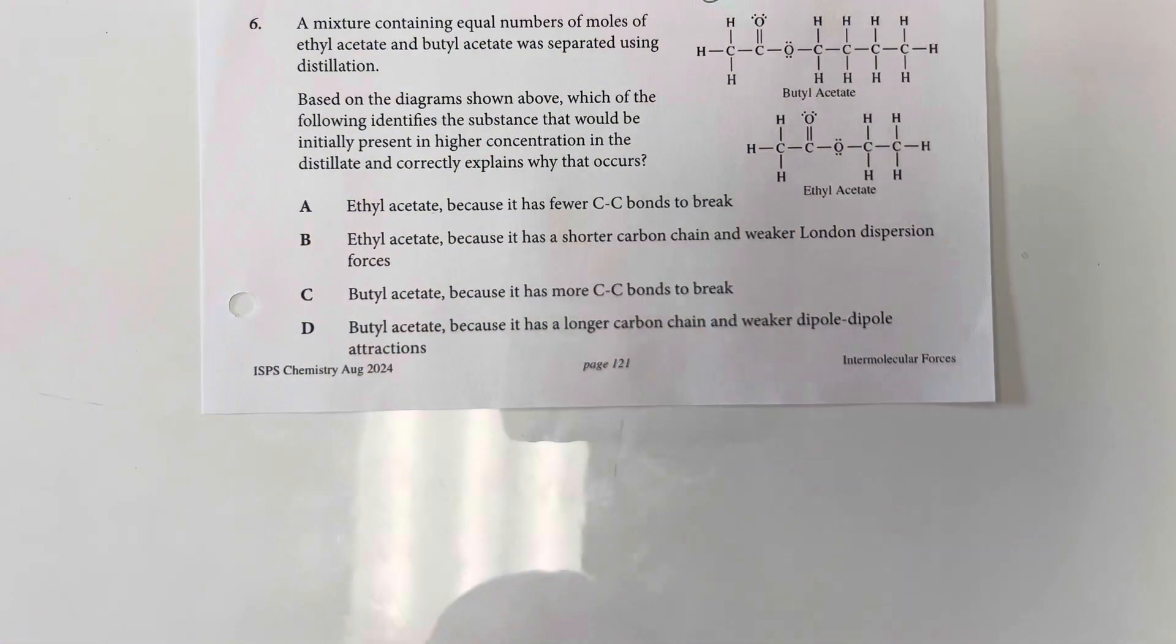A mixture containing equal number of moles of ethyl acetate and butyl acetate was separated using distillation. Based on the diagram shown above, which of the following identifies the substance that would be initially present in higher concentration in the distillate and correctly explains why that occurs.